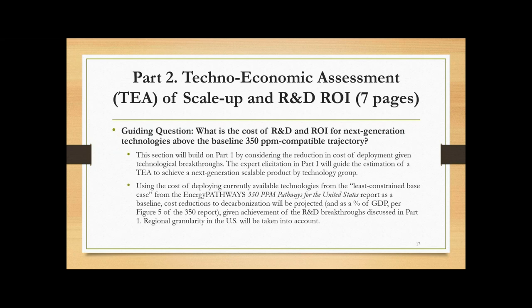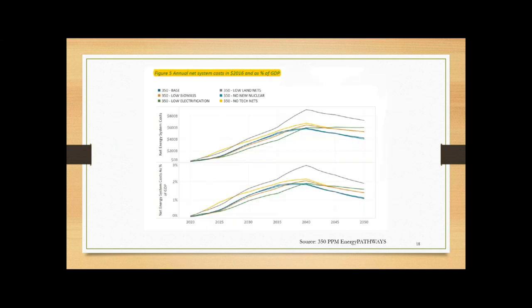Once I have those specific areas fleshed out completely, what I want to ask in the second part is what is the cost of R&D and ROI for next-gen technologies above the baseline 350 ppm compatible trajectory. So basically, this will build on part one by considering the reduction in cost of deployment of the technologies given breakthroughs have occurred. So the cost of deploying currently available technologies is shown in the Energy Pathways report. In the next slide, I'll show you. But what I would like to do is to project the reduction in cost as a percentage of GDP given achievement of the breakthroughs discussed in part one. So this is the graph that's shown in the report. And I like how it's displayed the specific net energy system costs as well as a percentage of GDP. And what I would like to show is the reduction in these costs given technological breakthroughs so that we can see the ROI on the investment.